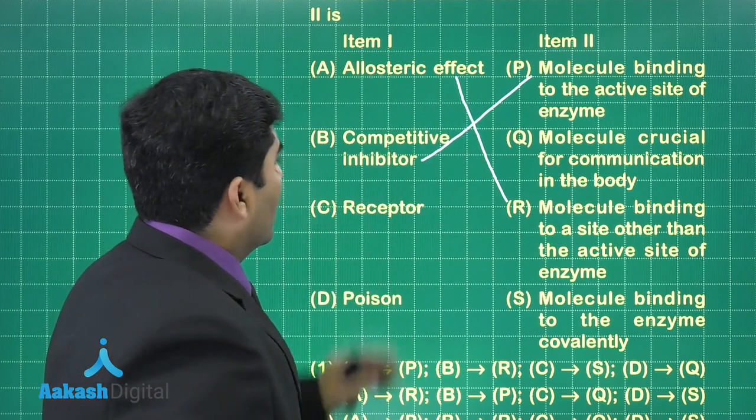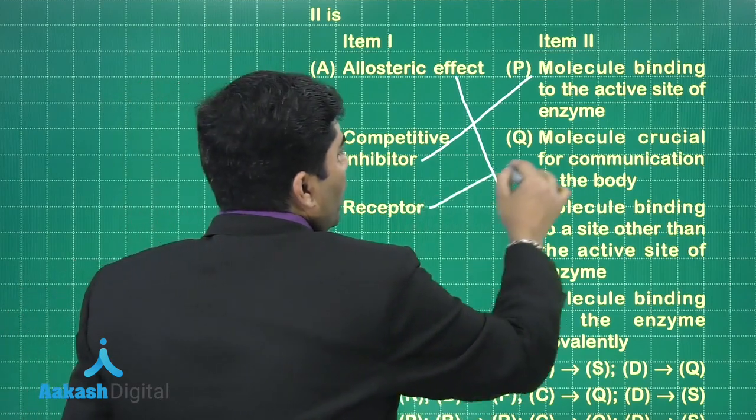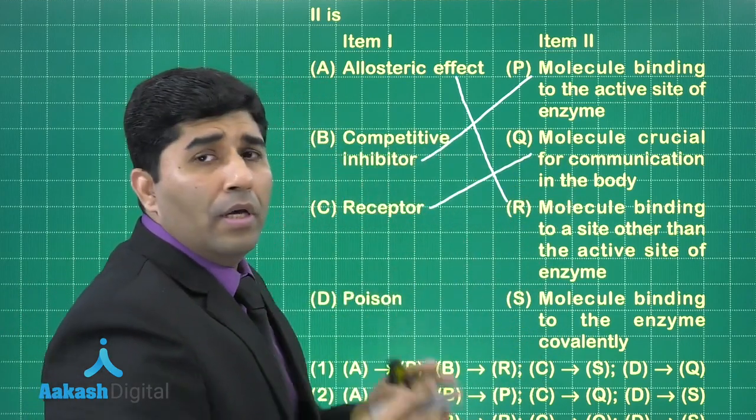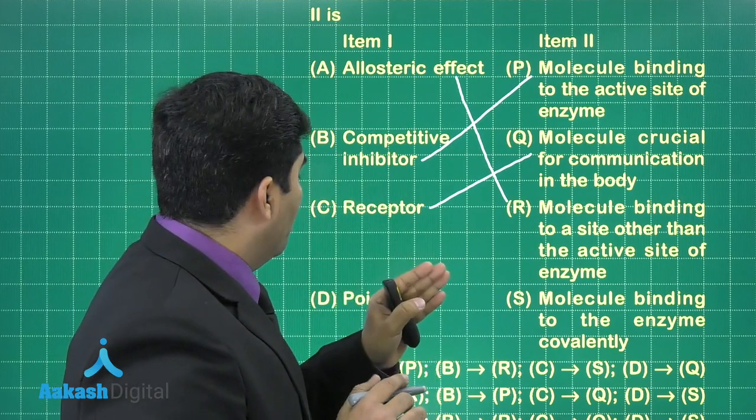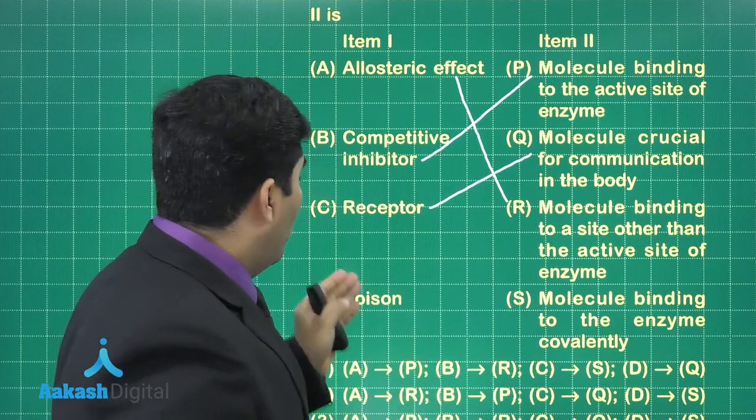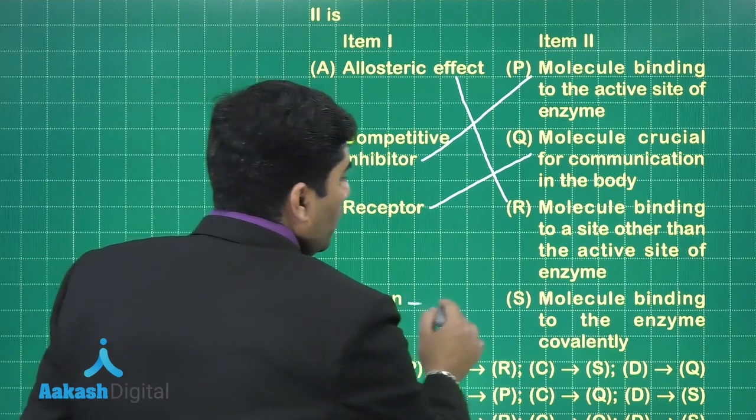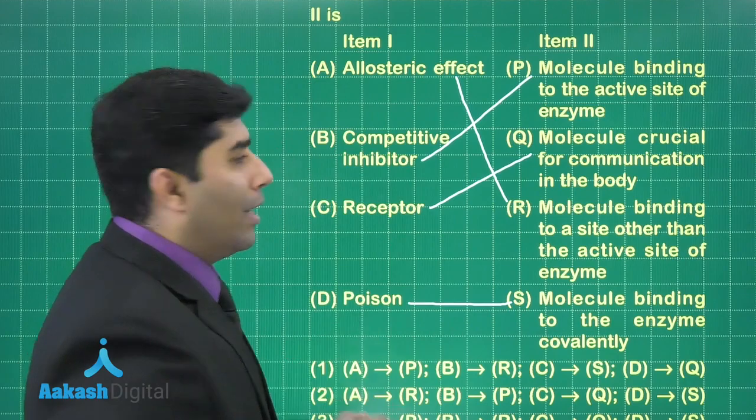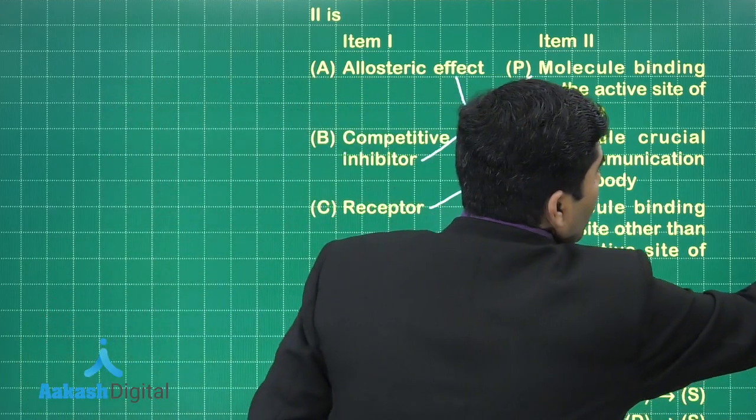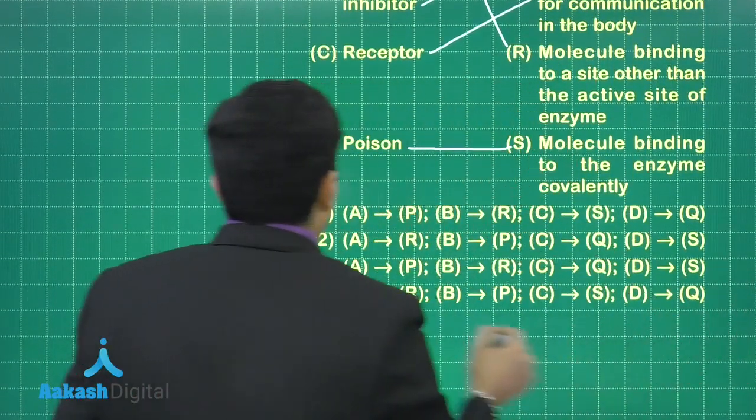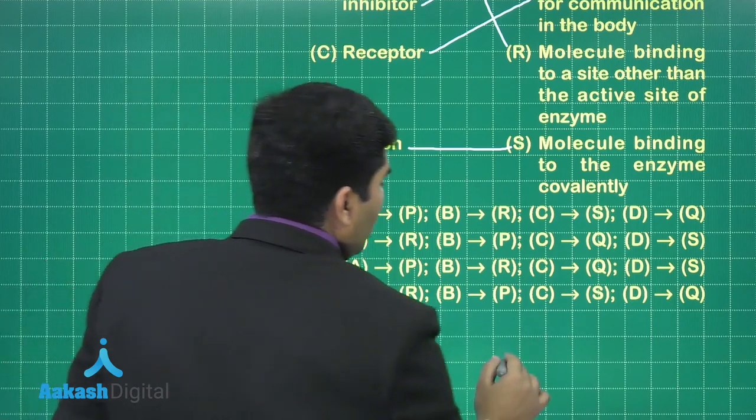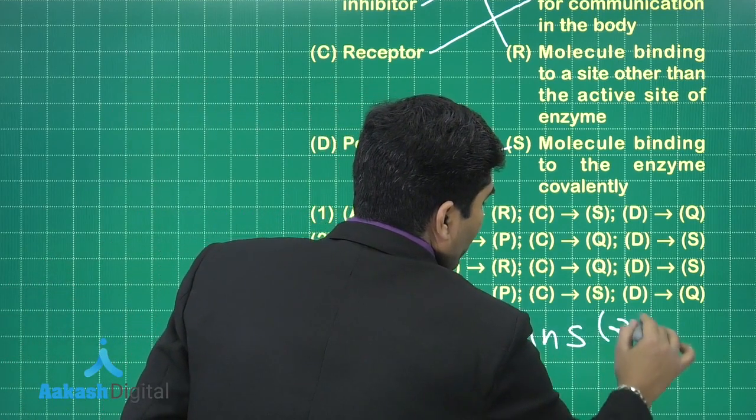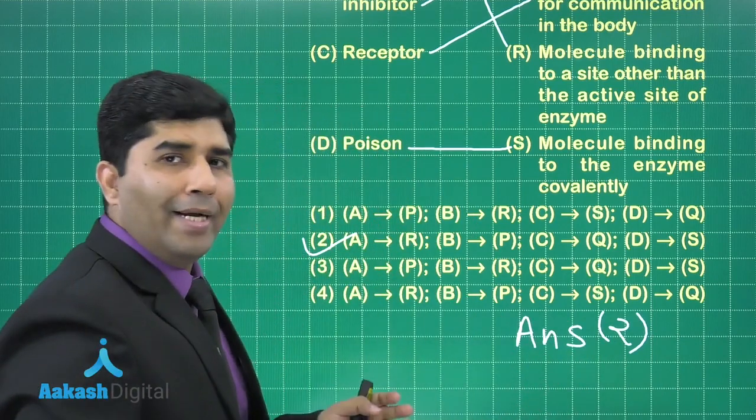Receptor. Now by receptor, what we can do - the molecule crucial for the communication in the body, and we all know the poison molecule binding to the enzyme covalently. That is why the final answer will be second. So the answer is option number two.